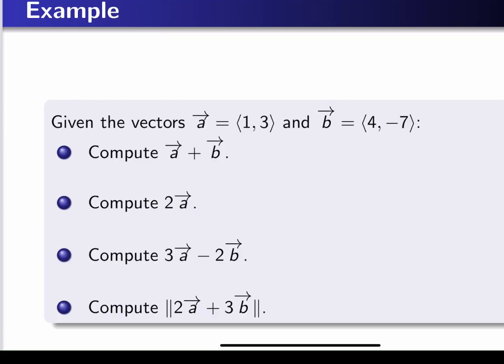Let's take our first example on vector arithmetic. We have vector a equal to (1, 3) and vector b equal to (4, -7). The first question is to compute a plus b. The second is to compute 2 times a. The third is compute 3a minus 2b. And the fourth is to compute the magnitude or norm of 2a plus 3b.